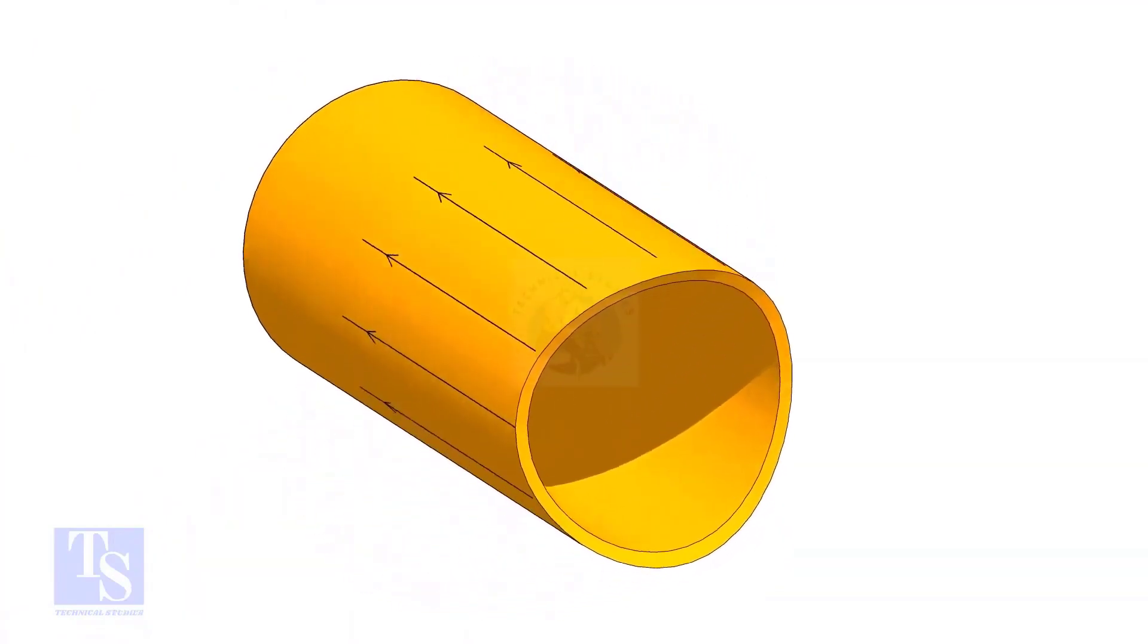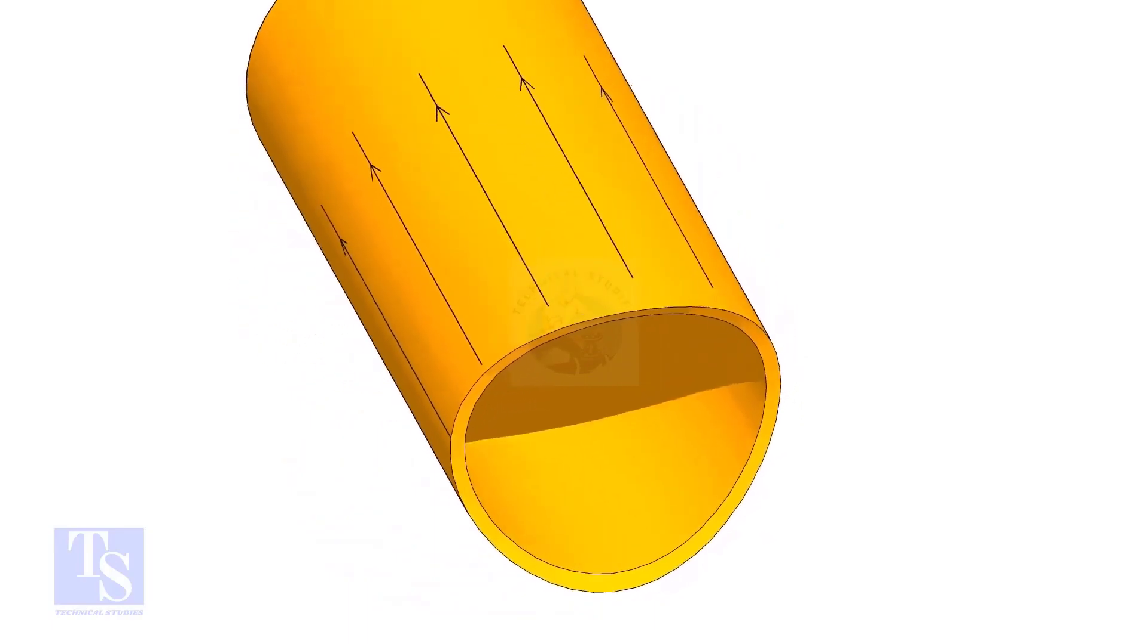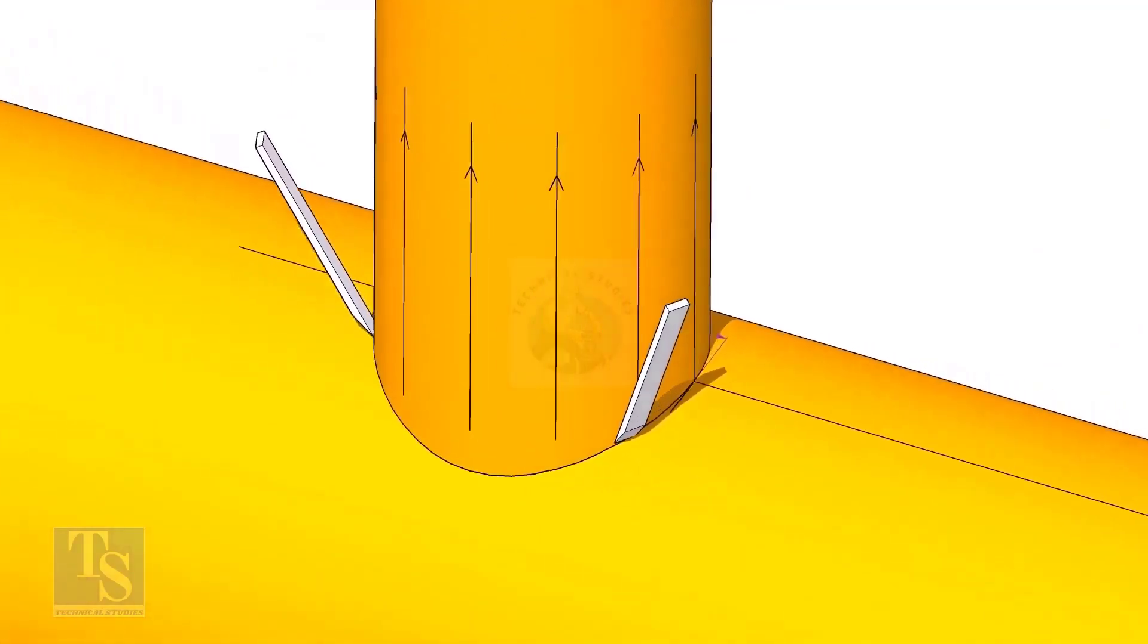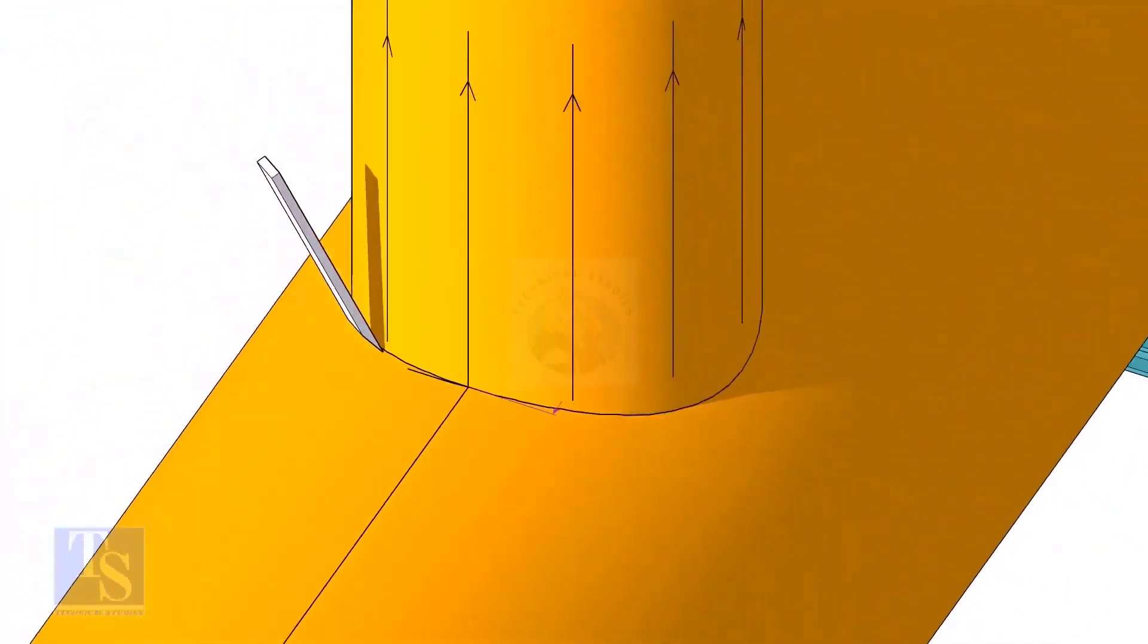After cutting and grinding the notch on the branch pipe, put it on the header. Make sure it is exactly in its position and mark the opening on the header as shown.